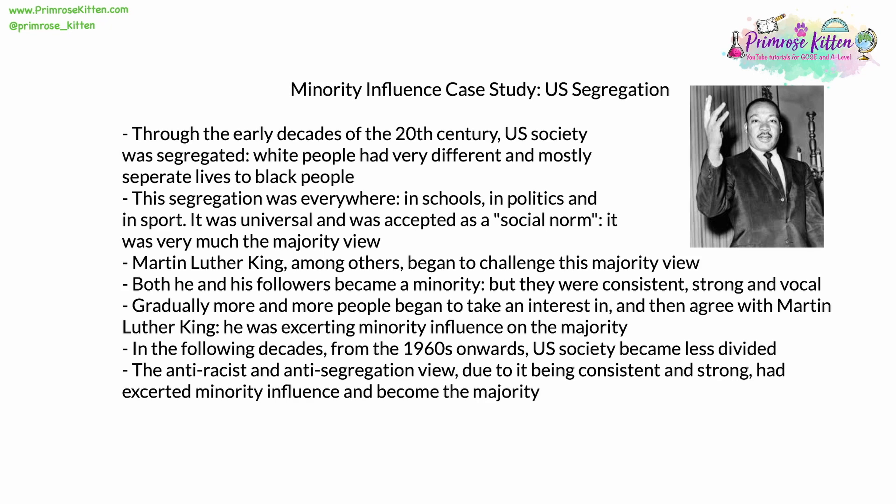Very gradually, more and more people began to take an interest in, and then at least internally agree with, Martin Luther King. He was starting to exert minority influence on the majority view. In the following decades — at least from about 1963 onwards — society in the United States became gradually less divided. The anti-racist and anti-segregation view, due to being consistent and strong, had successfully exerted minority influence, and due to the snowball effect, it quickly became the majority.